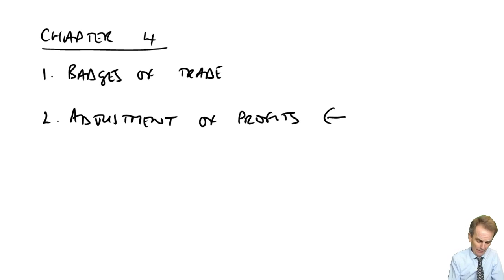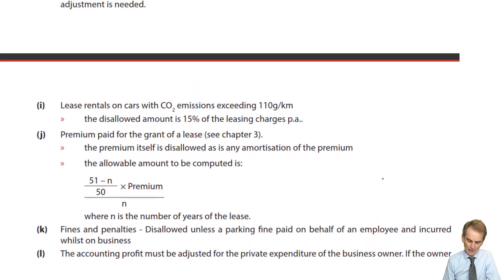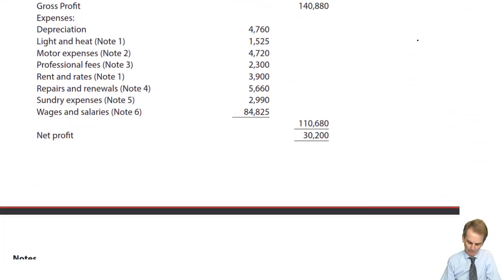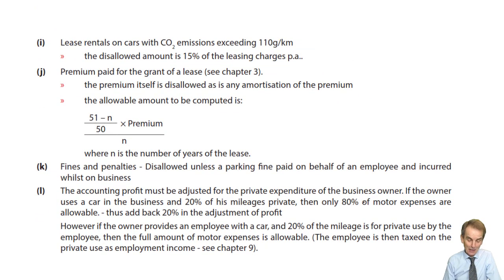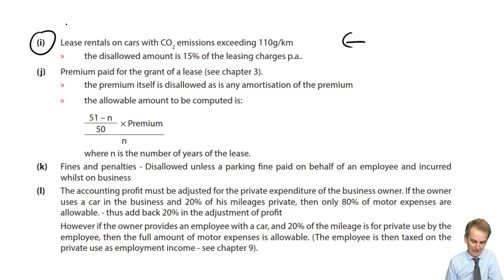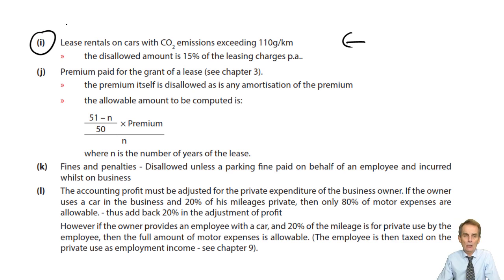The only adjustment you need to be aware of — if I take you back to one of the pages in our notes, about the third side through — you come to a list of issues. This is the adjustment of profits exercise. What we've got is an adjustment in relation to leased cars, whereby the lease hire charge that's been debited on the statement of profit or loss will not all be allowable if we're dealing with what we may refer to as a high emission car.